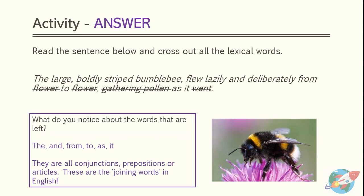Welcome back. Here is the answer for our activity. I've crossed out all the lexical words in our sentence. The words that are left are: the, and, from, to, as, and it. They are all conjunctions, prepositions, or articles — these are known as the joining words in English. So if you cross out all the lexical words, the sentence does not really make any sense at all — it is just a series of joining words together. Lexical words are an essential way to impart meaning in English.